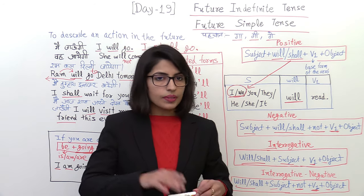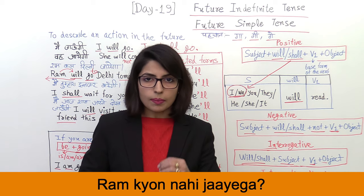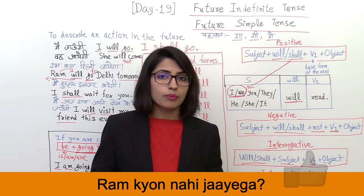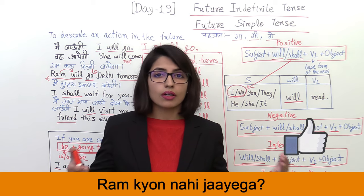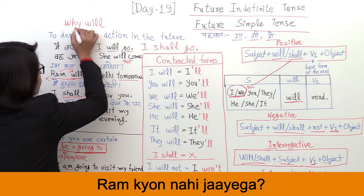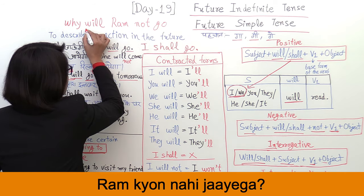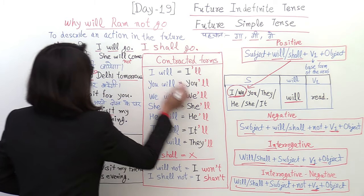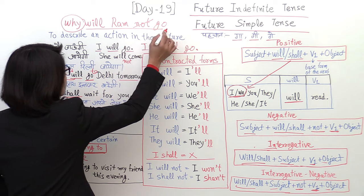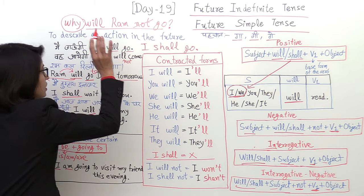Now this is the yes/no question. If there is also a question word, why will Ram not come? So the first question word comes. When there is a question word in any question, it will come first. So what did I say? Why will Ram not come? So why, we will put it first. Why, then after that, the helping verb. Why will Ram not go? So you have to pay attention to this. This structure is the interrogative negative. The first question word comes.